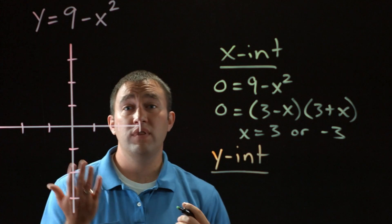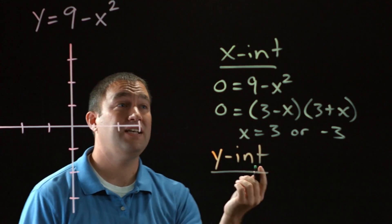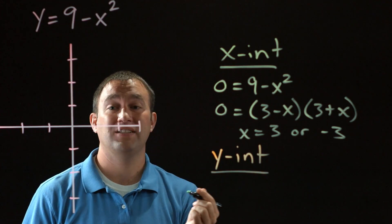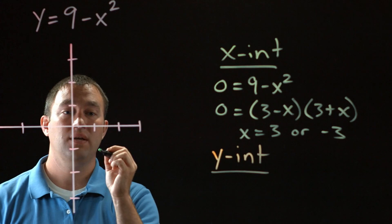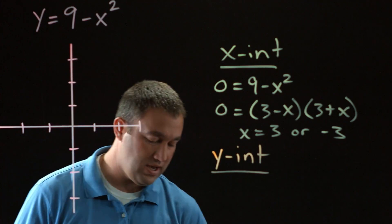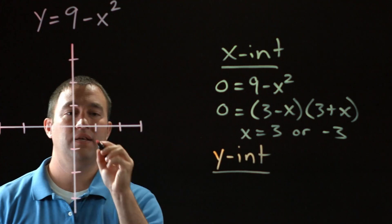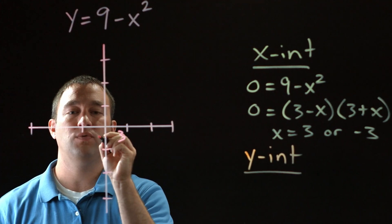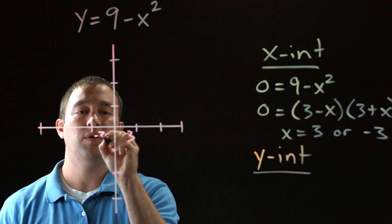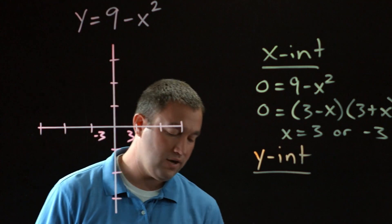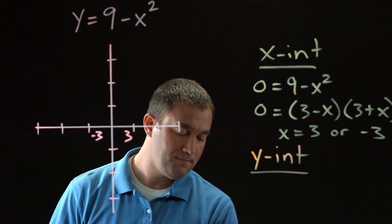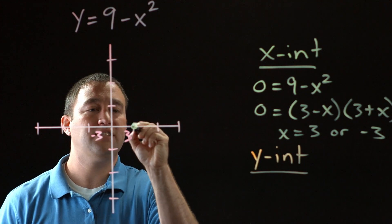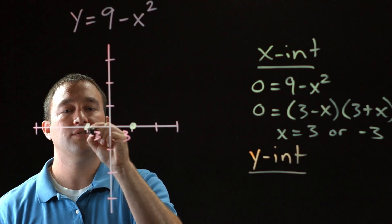So whatever this function looks like, it must hit the x-axis at x equals 3 — I'll mark that right here as 3 — and at x equals negative 3, I'll call this one negative 3. So I'll put two little dots there for the x-intercepts.